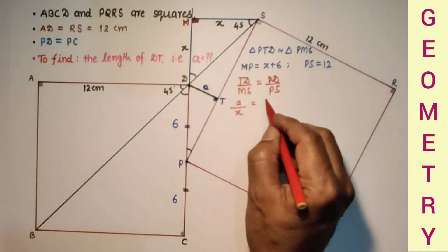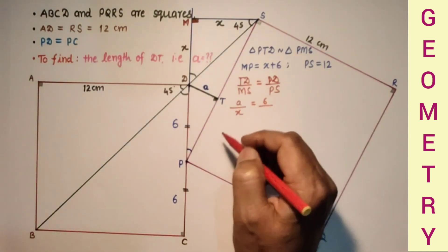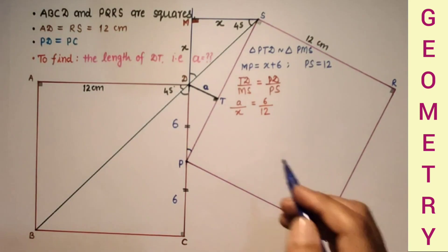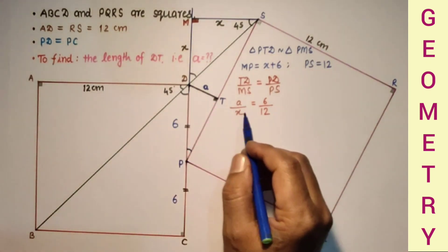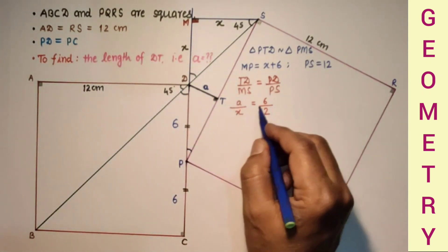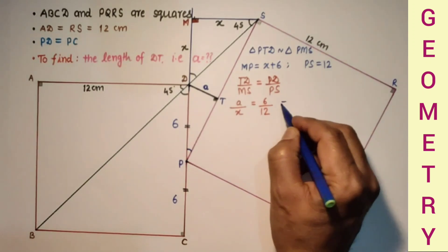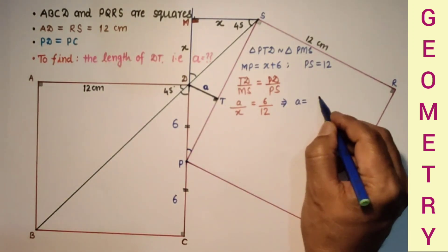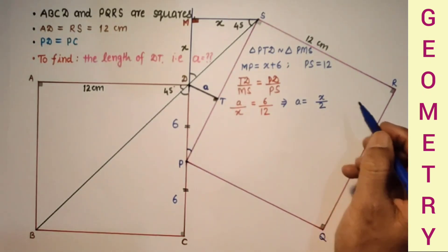This is equal to PD which is 6 by PS which is 12. So required length A is equal to half X. A is equal to X by 2.